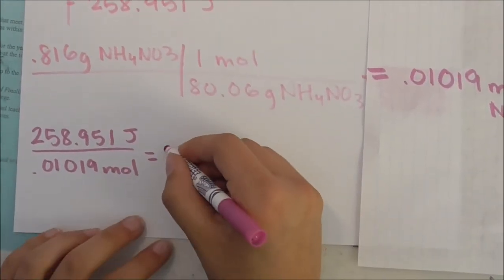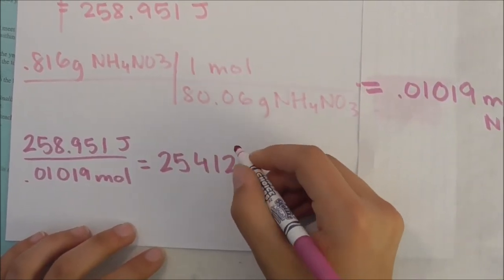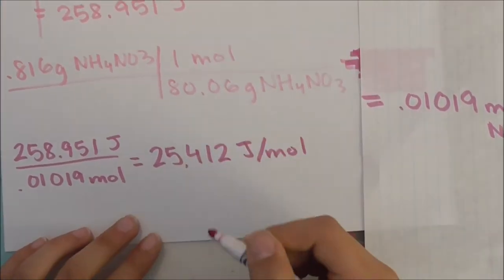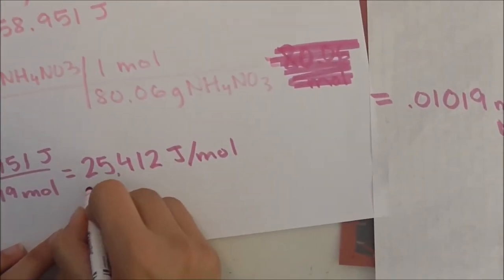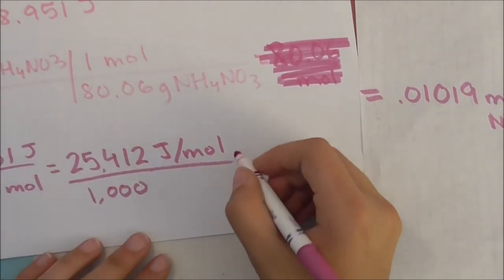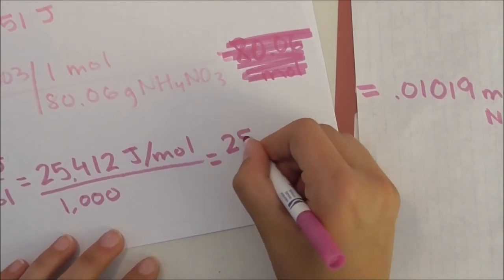This gives us the answer of 25,412 joules per mole. But the answers are in kilojoules per mole. So, therefore, you divide that answer by 1,000. With that, we get the answer 25.4 kilojoules per mole.